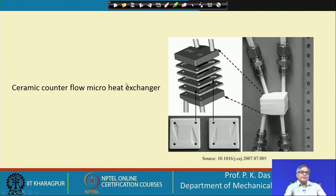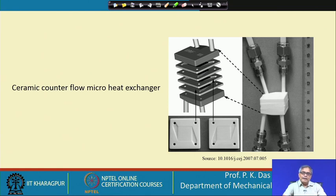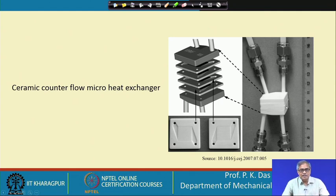This is a ceramic counter-flow micro heat exchanger. As mentioned earlier, in micro heat exchangers, materials other than metal are used — like glass, ceramic, and silicon. This is one such example. Looking at the dimensions, this heat exchanger is really small. When we have to handle very clean fluid in small quantities where heat transfer is important, we can use micro heat exchangers.